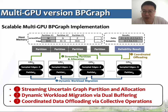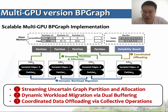With increasing uncertain graph sizes, scaling BPGraph to multi-GPU systems becomes more desirable. BPGraph tackles scalability challenges via three techniques. First, a streaming uncertain graph partition and allocation strategy over multi-GPUs is designed using edge partition, with graph partition loading optimizations. Second, a dynamic workload migration via dual buffering balances workload across different devices due to path-length differences. Third, to maintain intermediate reliability results, a shared zero-copy buffer stores the separate path array for each GPU after synchronization. Combining them, we achieve an efficient and scalable BPGraph for large-scale uncertain graph processing.